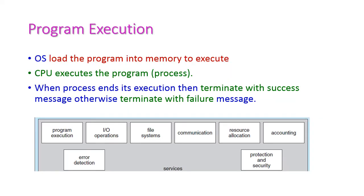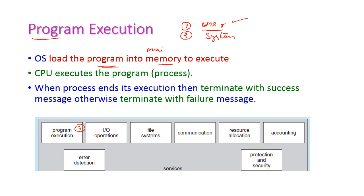There are two sets of services provided by the operating system: user-based services and system-based services. The first user-based service is program execution. The operating system loads the program into main memory to execute it, and the CPU will execute that program. A program under execution is called a process.